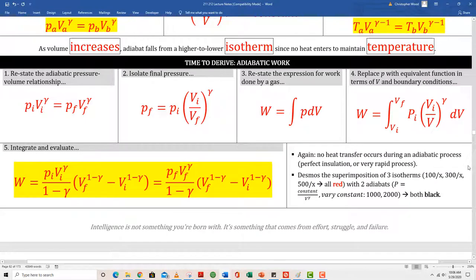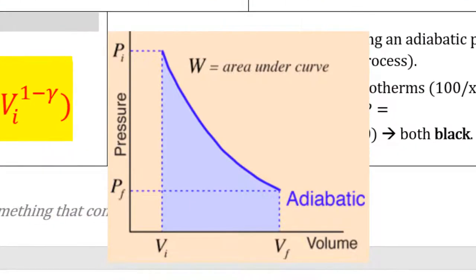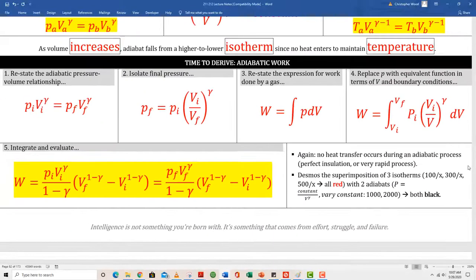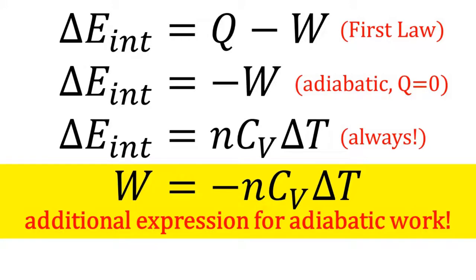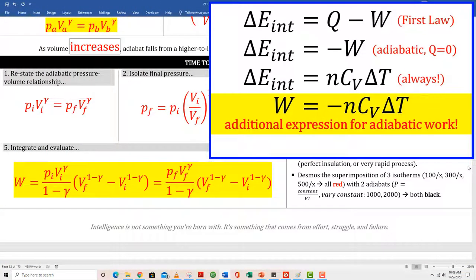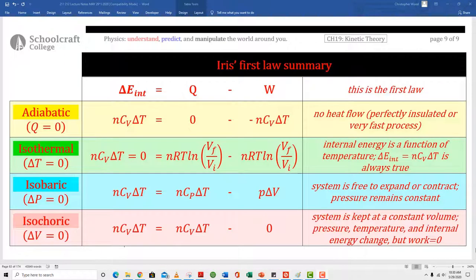Lastly, time to derive adiabatic work. Boxes 1 through 4 show a pretty straightforward path to box 5 — the expression for work done during an adiabatic process, which is the area under an adiabat on a PV diagram. As an aside, you never really need to use this expression at our level. If Q equals 0, then the change in internal energy equals work, and the change in internal energy is always nCV delta T. So adiabatic work equals what you see in box 5, and it also equals negative nCV delta T. Here's a really useful summary table that one of my former students came up with — a lot of the content in these lecture notes comes from students, so please feel free to suggest modifications or new additions.